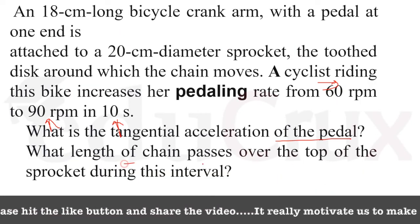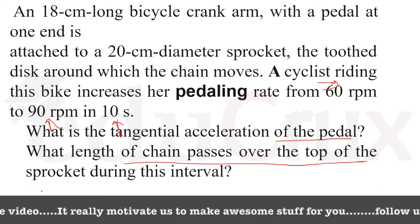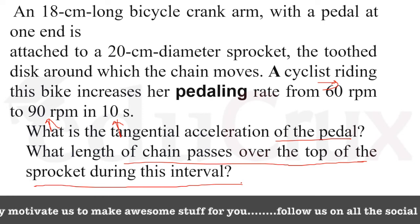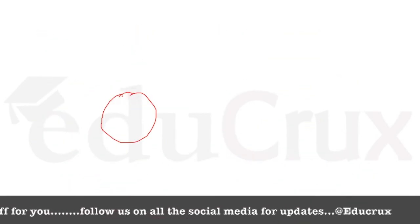On the second part, it says what length of chain passes over the top of the sprocket during the interval. So see, this is the spiky thing. Now it says, what is the length the chain is traveling? The chain bounds up and leaves, bounds up and leaves.